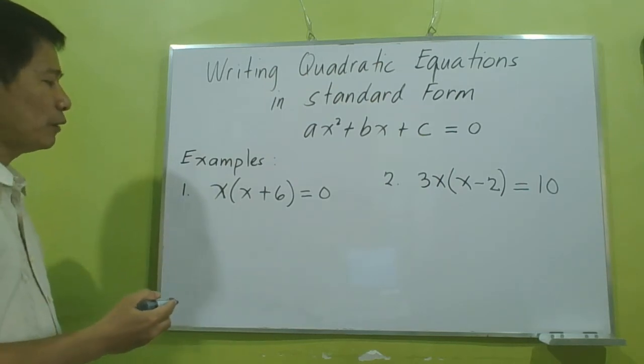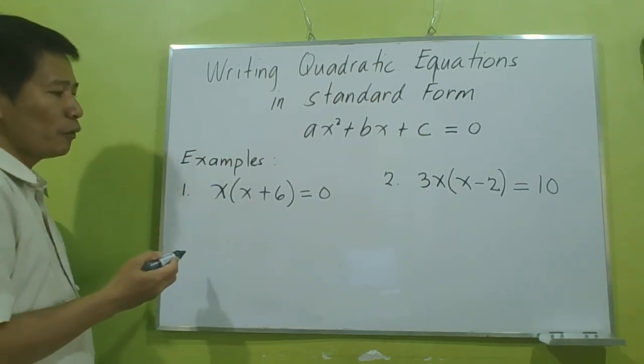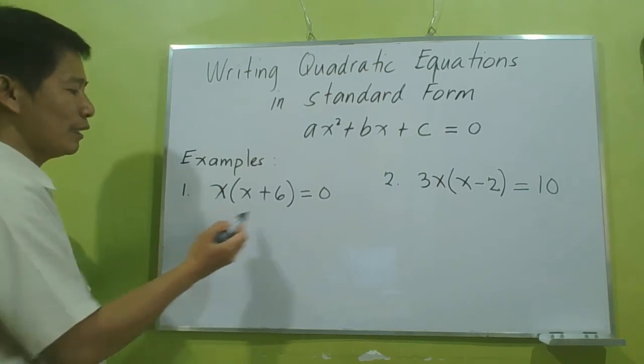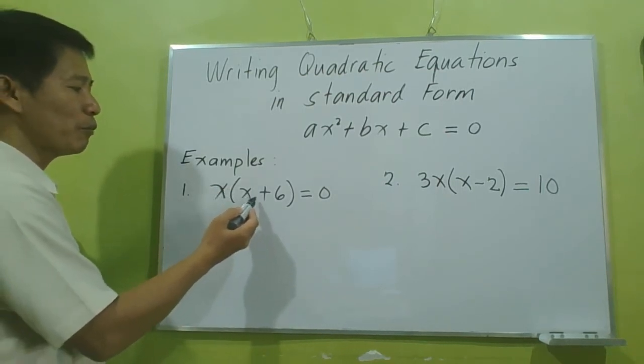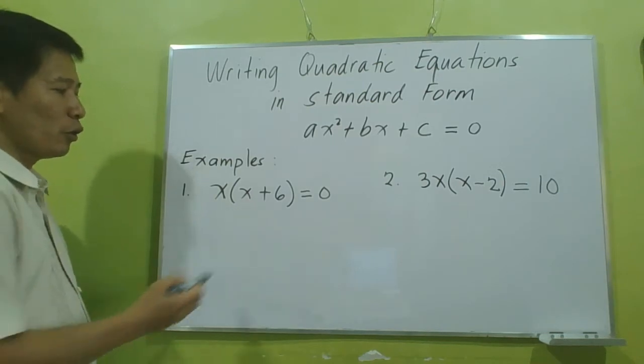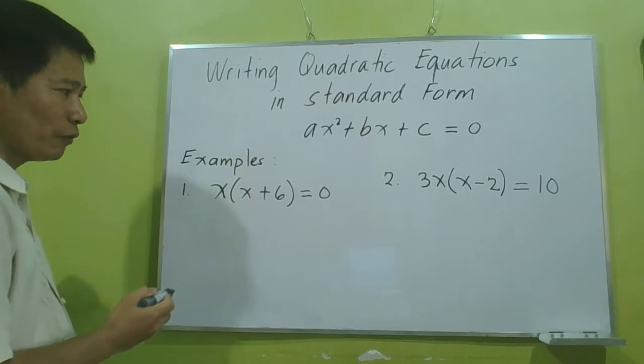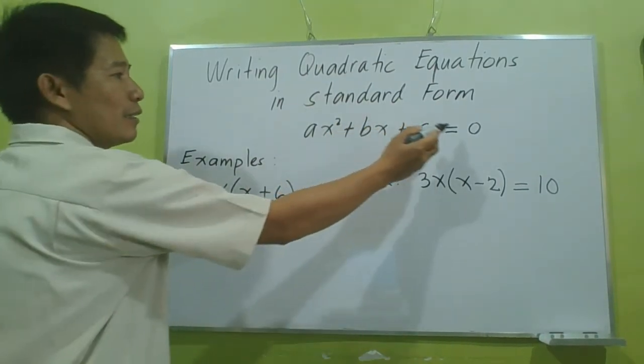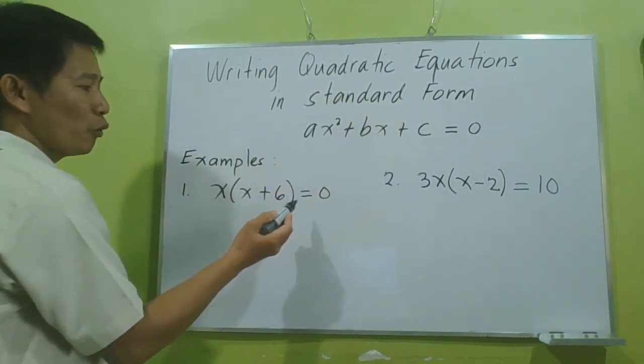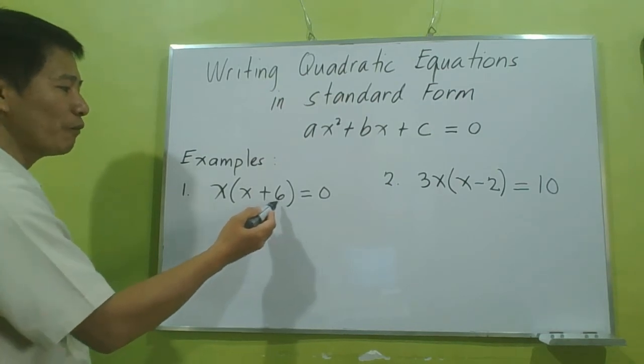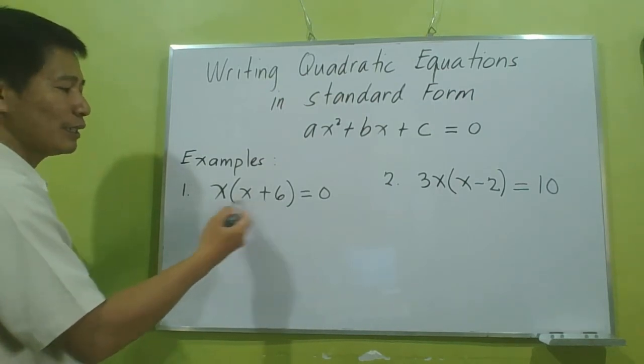Let us have our example number 1. If you observe, in example number 1, we have the left side: x multiplied by (x + 6), and the right side equals 0. The right side is already set to 0, so all we need to do is simplify this left side.